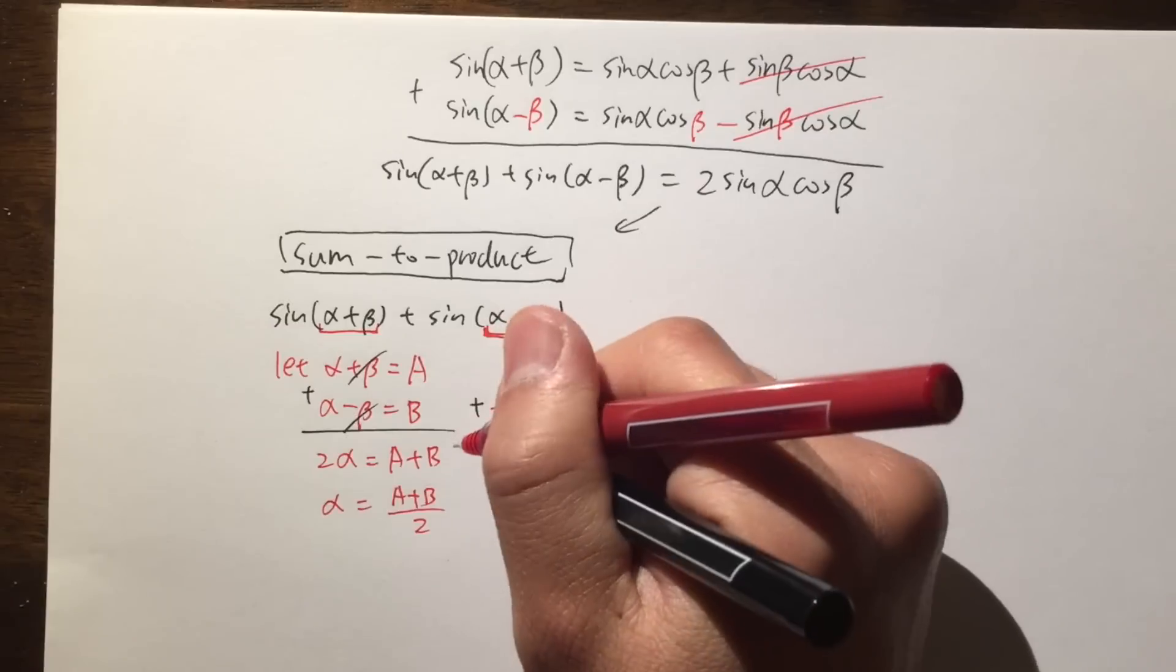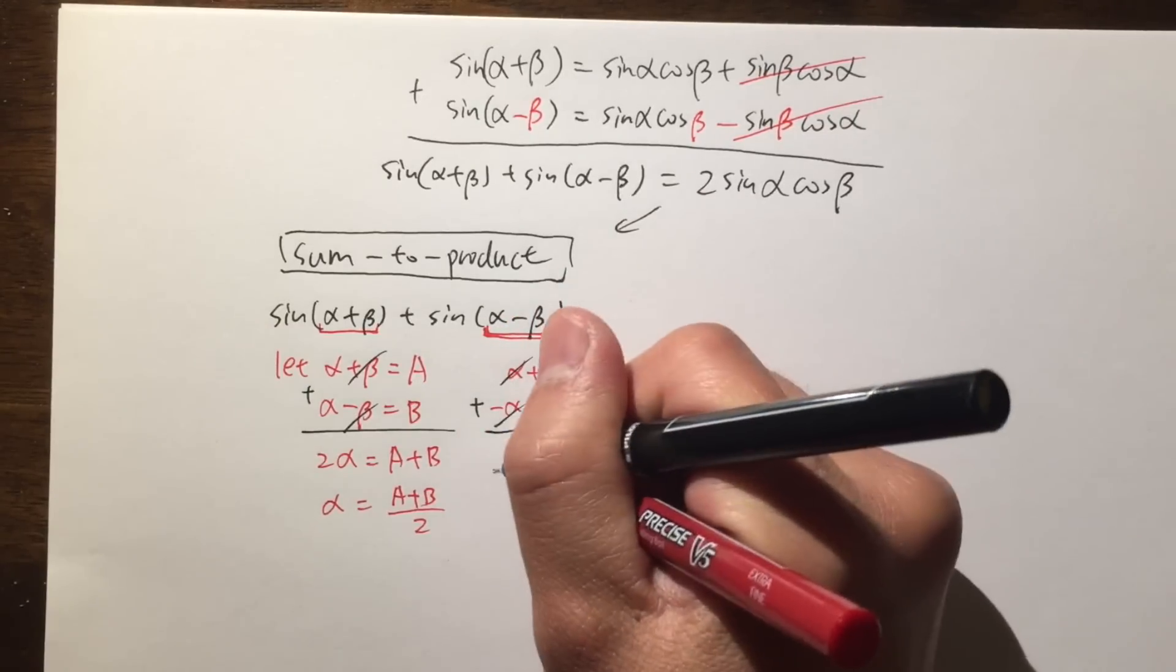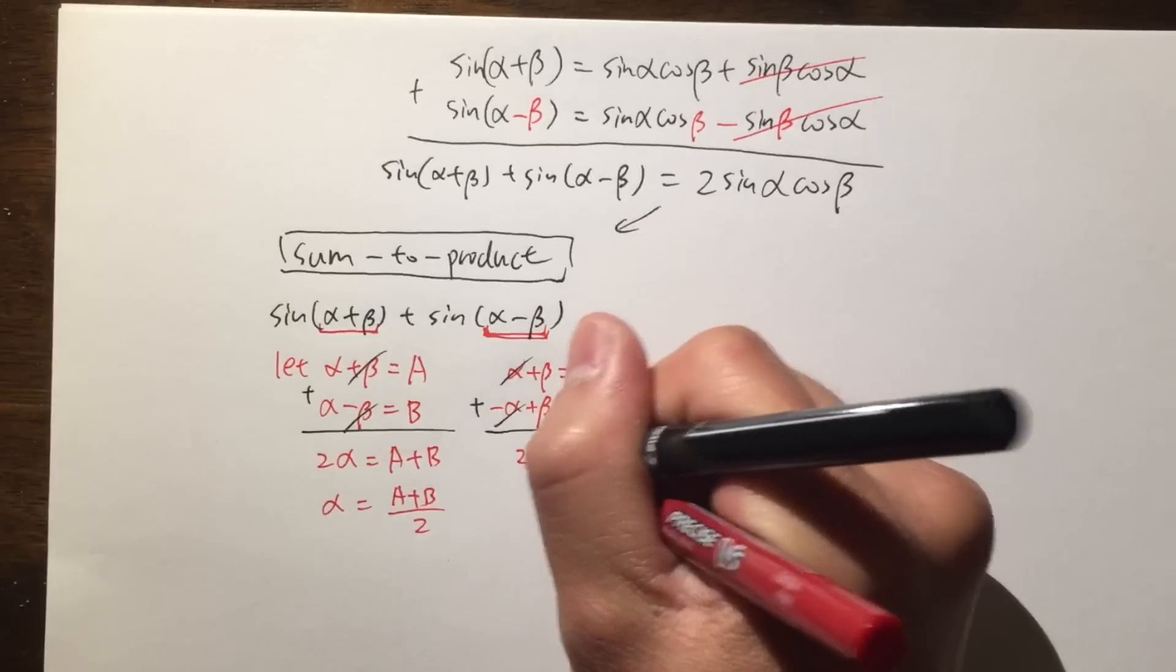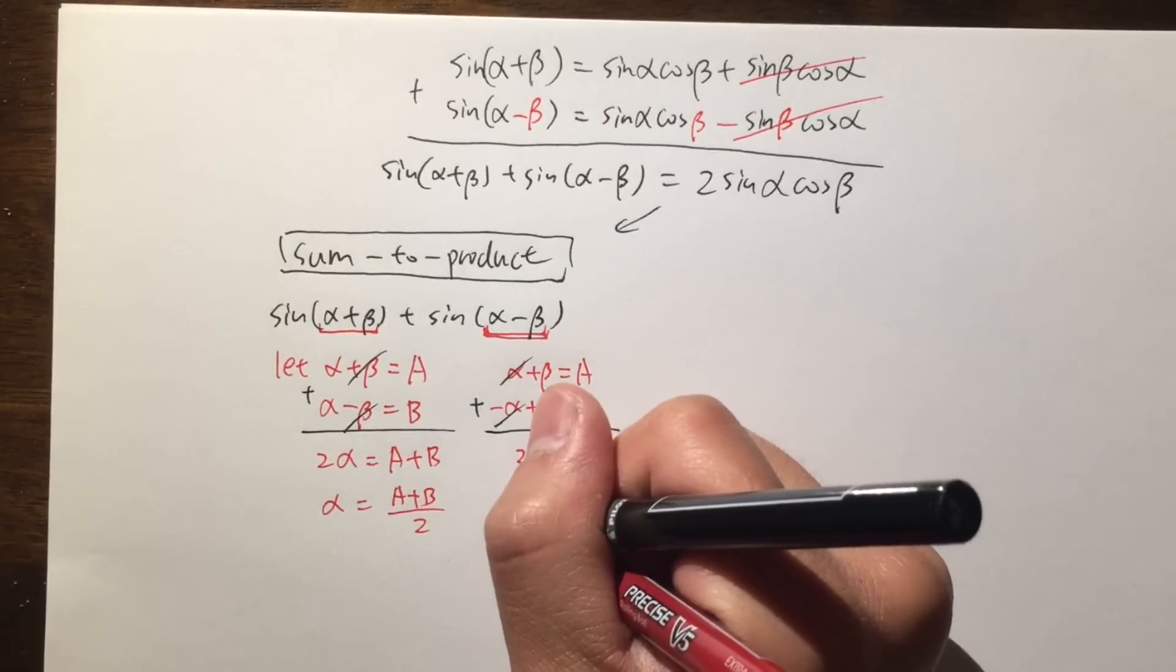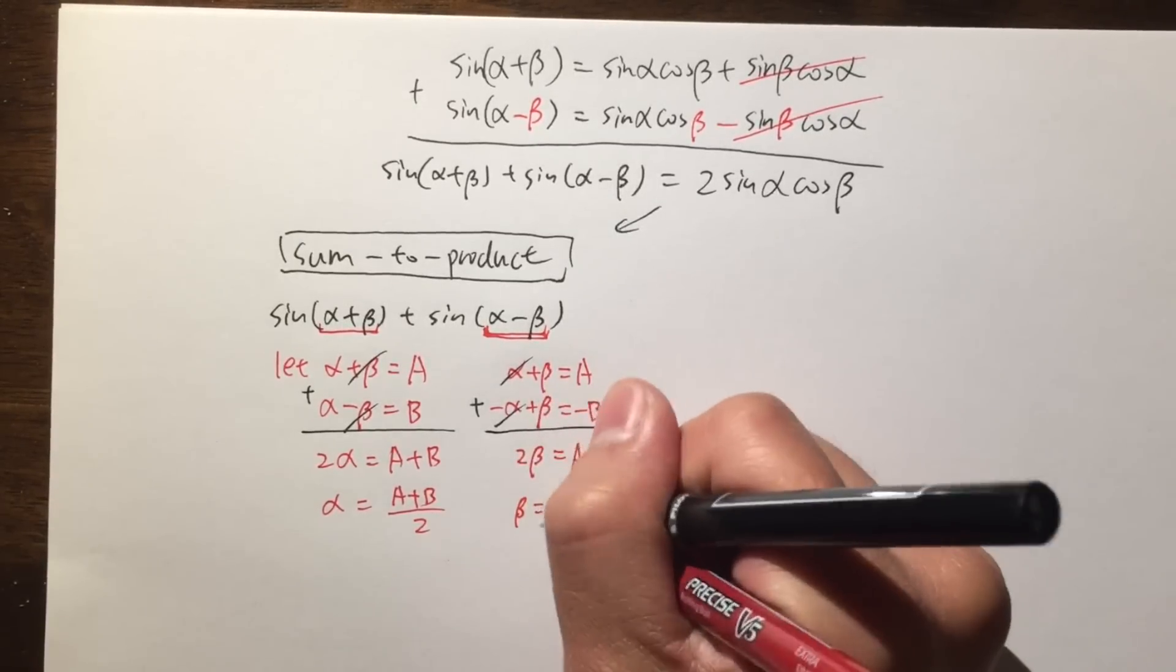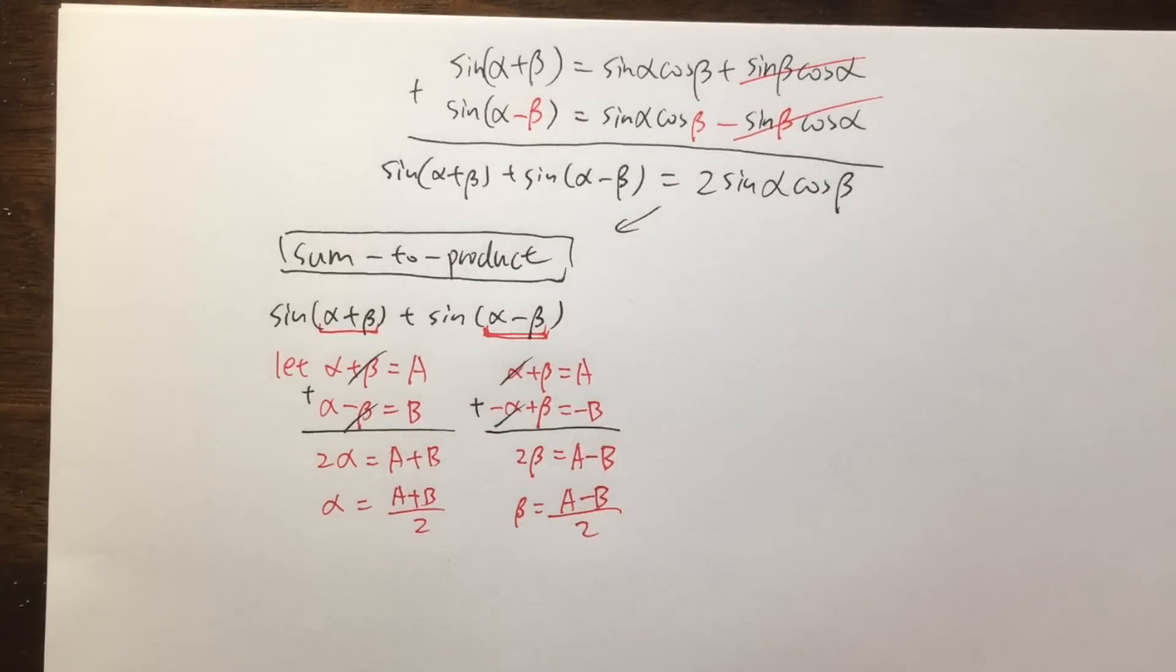So I can just add them up again. And we see this time the alpha cancel each other out. And beta plus beta, that's 2 beta. And then this is equal to A minus B. Divide both sides by 2. We get beta is equal to A minus B all over 2 like that, right? Cool.